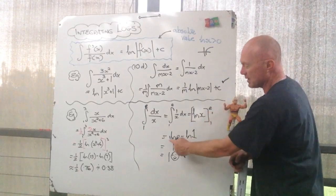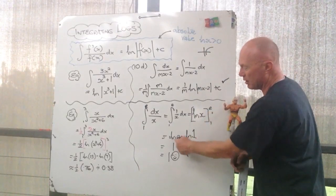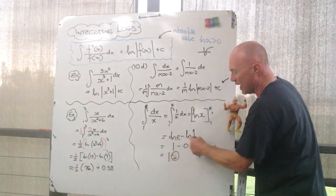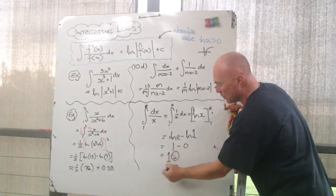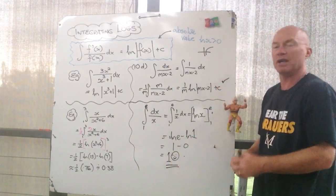From e to one. So that's log of e minus log of one. Log of e is just one. Log of one is just zero. So the answer to that is just one. Pretty straightforward.